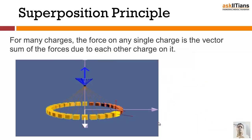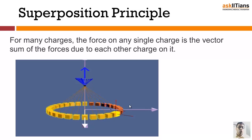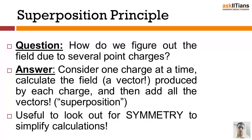Supposing you have a system with multiple charges — you cannot say there is just going to be one single charge. There is the possibility that multiple charges are present. In that case, how will you find the net force? The way to find the net force is what is known as the superposition principle. According to this, you find the force on any particular charge by summing up all the forces that exist on that charge.